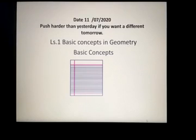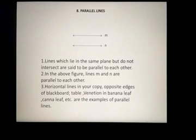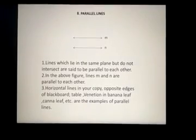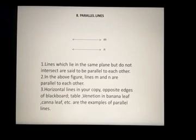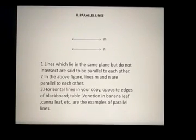Therefore we can say lines which lie in the same plane but do not intersect are said to be parallel to each other. In the above figure, lines M and N are parallel to each other.